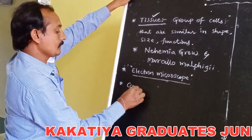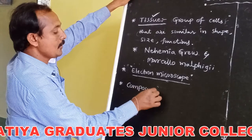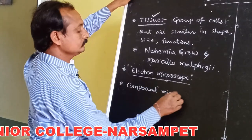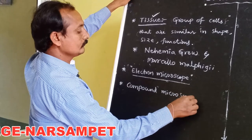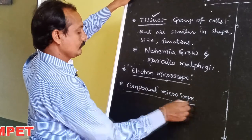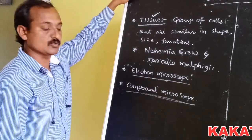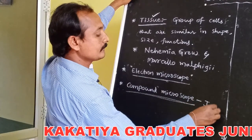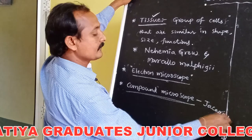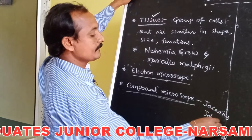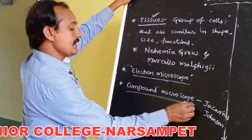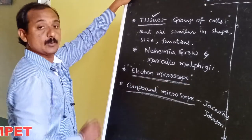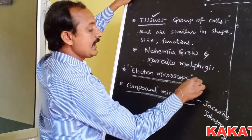The compound microscope was discovered by Zacharias Janssen. The electron microscope was discovered by Knoll and Ruska.